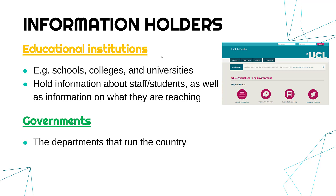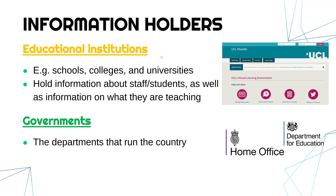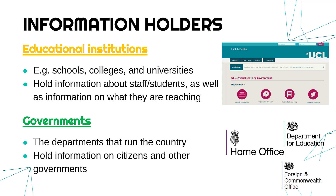Governments collect more and more information. They are the departments that run the country — we often think about people based in Westminster and the Houses of Parliament, but it's not just politicians; you've got other people working for these departments. Things like the Home Office, Department of Education, and the Foreign Office each have their own specific purposes. The Home Office manages the police and prisons; the Department of Education covers schools and collects information on how many teachers there are, what subjects they teach, and exam results. Essentially, governments hold information on their citizens, and bodies like the Foreign Office also collect information on other governments to help make decisions to run the country.